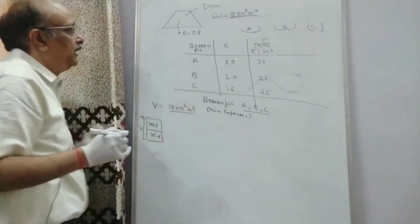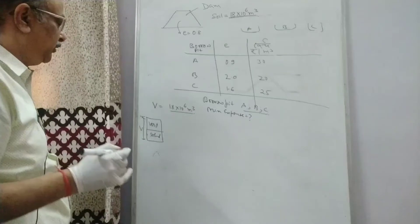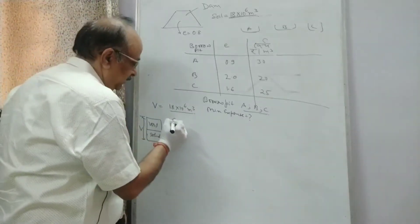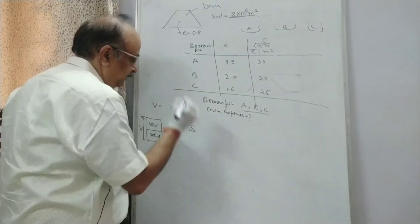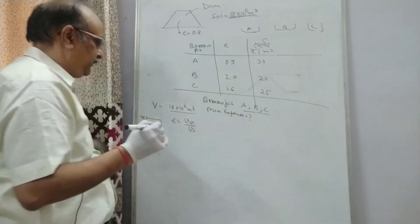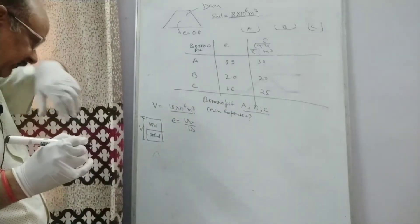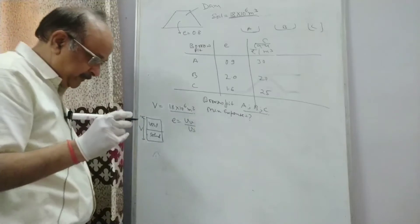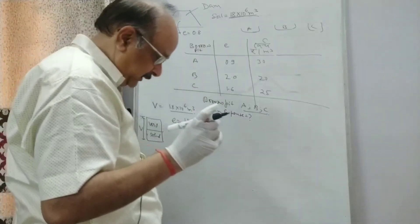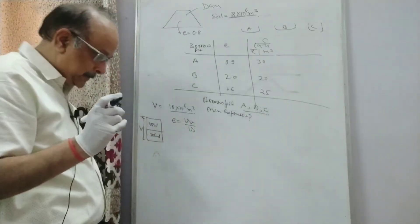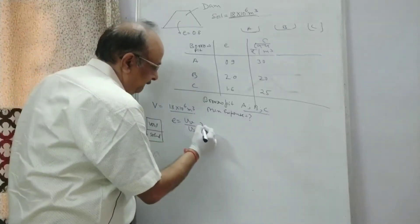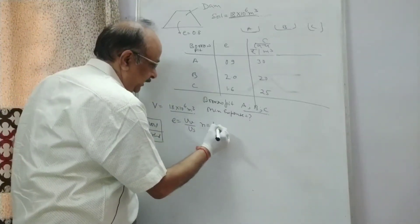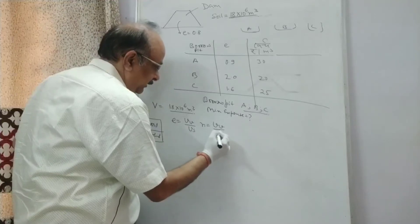We have been given the void ratio. The void ratio is VV upon Vs. And the porosity will be VV upon total V.